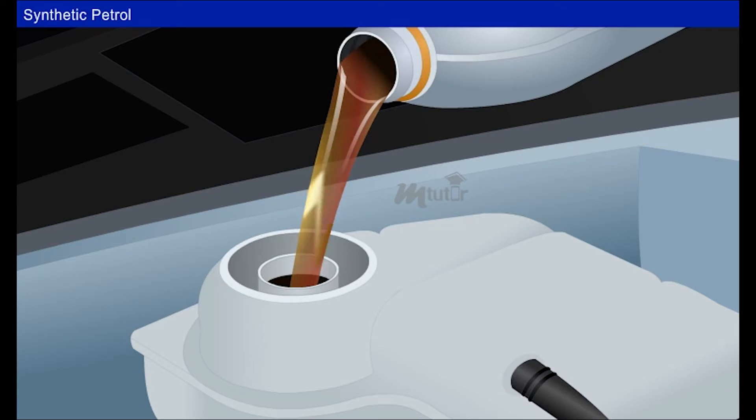Synthetic petrol is a mixture of alkanes with a composition resembling that of petrol. This is obtained artificially from coal. Let us discuss two important methods for the preparation of synthetic petrol.